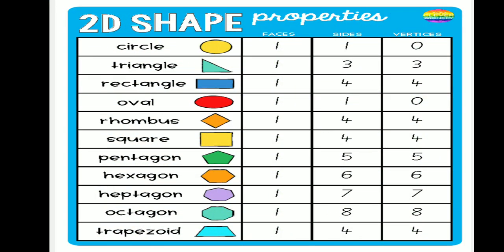Here are the 2D shapes and their properties. The shapes include: circle, triangle, rectangle, oval, rhombus, square, pentagon, hexagon, heptagon, octagon and trapezoid.